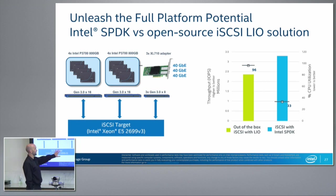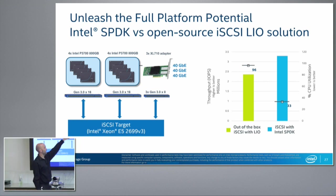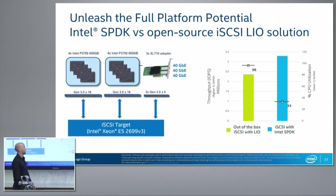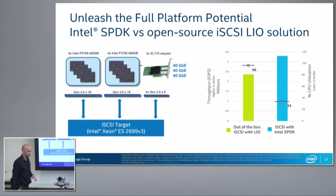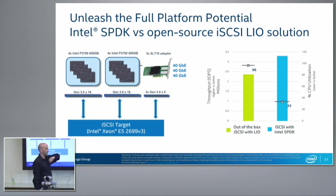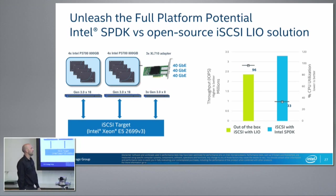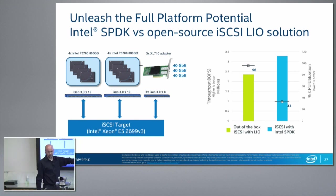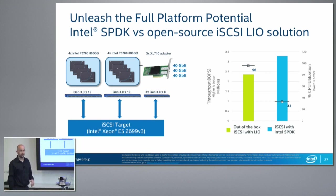This is a quick performance slide for iSCSI, not NVMF. The system configuration has eight P3700s, three by 40 gig networking, and a Xeon V3. Using the LIO Linux in-kernel target, you see just under two and a half million IOPS using 96% of the CPU in the system. With SPDK, you see approaching three and a half million IOPS at only 33% of the CPU used. There's a lot of bottleneck we know we can further tweak out - it's just a matter of time and effort. This is using standard Ethernet as opposed to RDMA, which we'll have in our next demo.